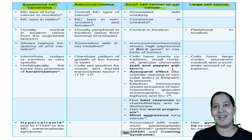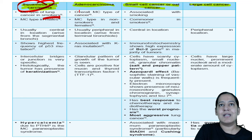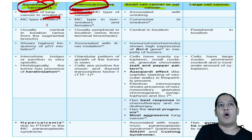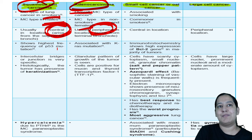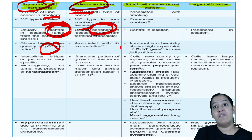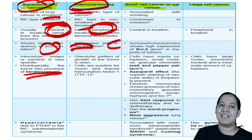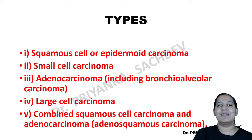Summary so far: squamous is central/hilar; adenocarcinoma is peripheral. Squamous is most common in India and males; adeno is most common overall and in females. Most common mutation leading to squamous cell carcinoma is p53; most common mutation leading to adenocarcinoma is KRAS. Squamous shows keratinization; adeno shows glandular pattern.